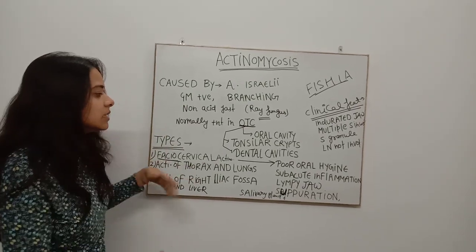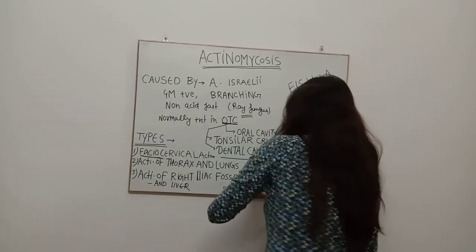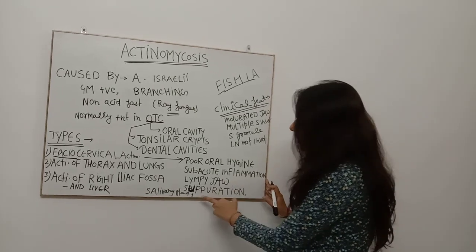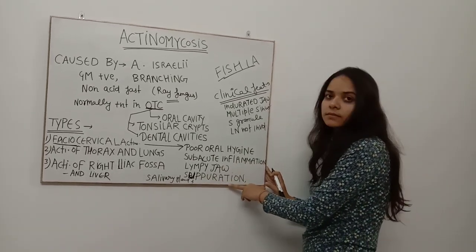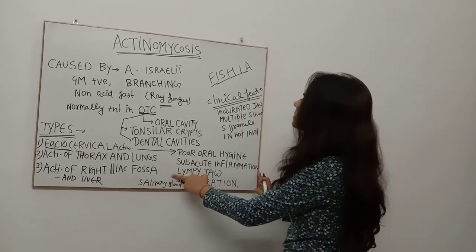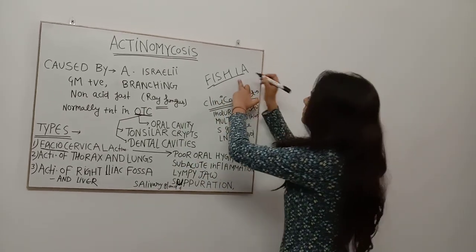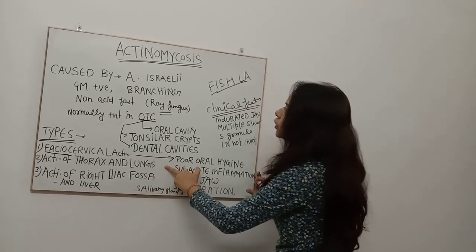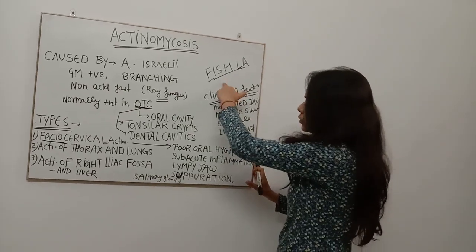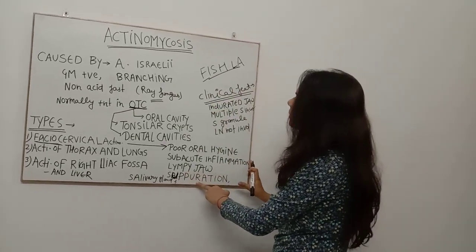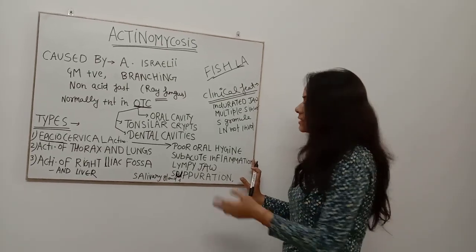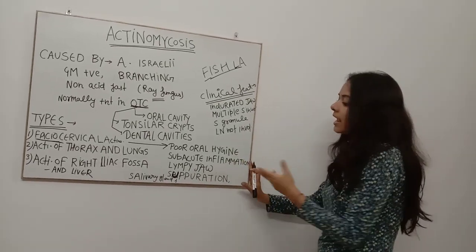It affects the cheeks and may cause acute inflammation. There may also be involvement of the salivary glands with increased salivary secretion. As a memory trick — 'FISH La': F refers to Fascio-cervical Actinomycosis, I refers to inflammation, S refers to salivary gland affected with secretion, H refers to hygiene — the person not maintaining oral hygiene is the key predisposing factor.